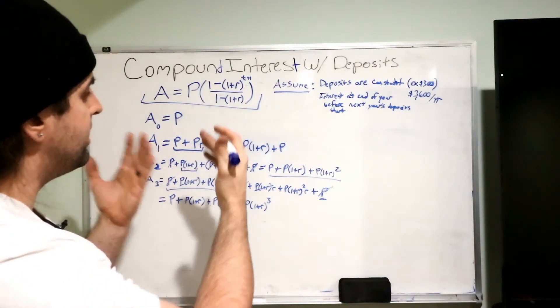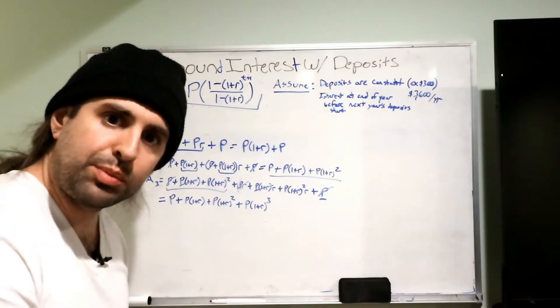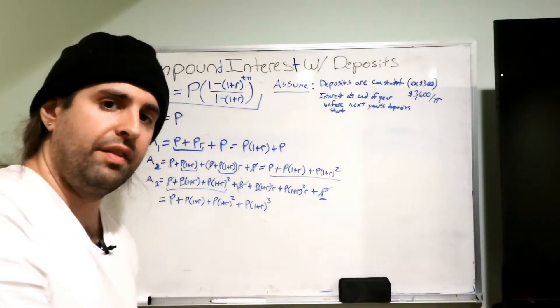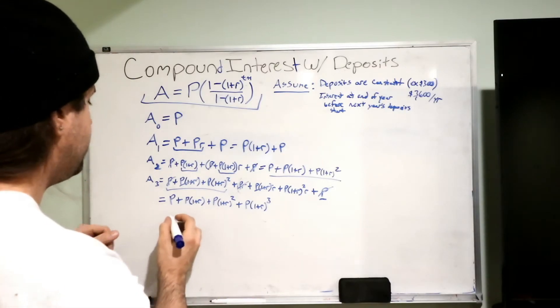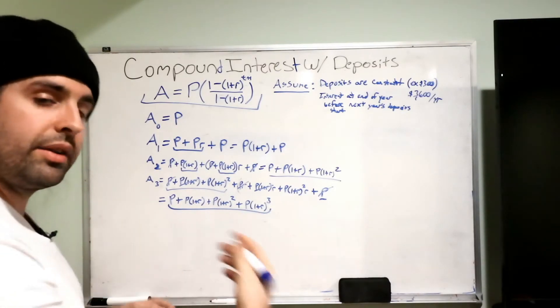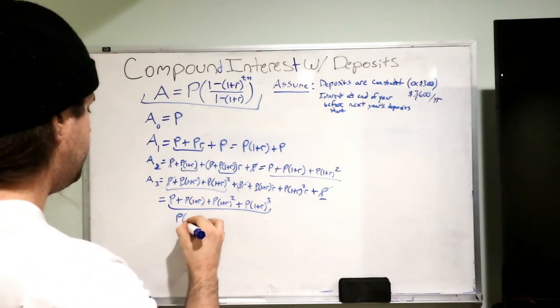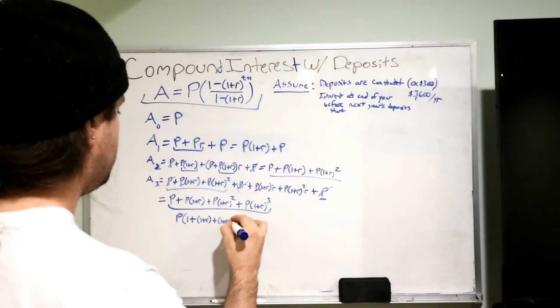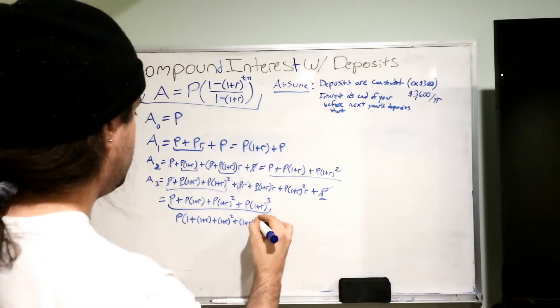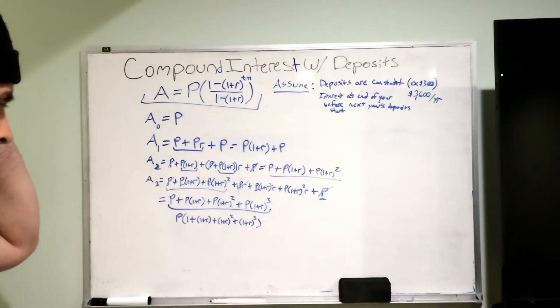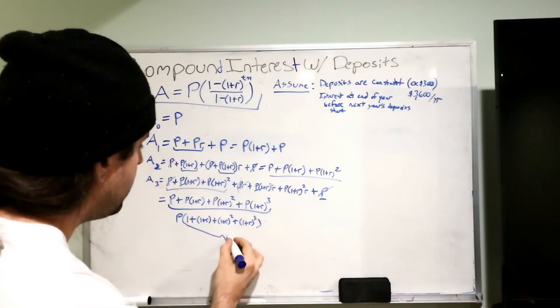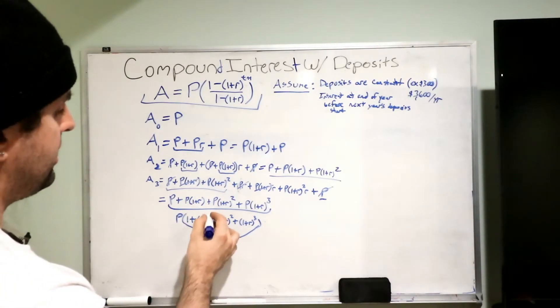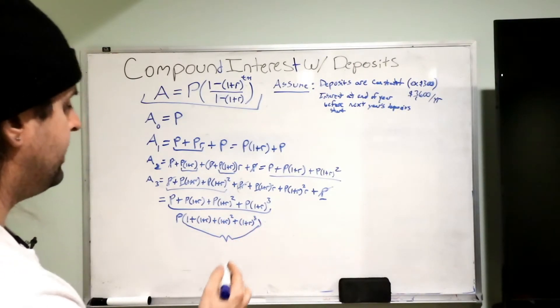And now the next portion, it relies on a derivation and then a proof to solidify the derivation which I'm not going to show in this video. Alright? But if we look right here and we pull out the common term which is P. We get P times 1 plus 1 plus R plus 1 plus R squared plus 1 plus R cubed. That. I just removed a P from all those. Alright? Now this right here is known as a geometric sum. Okay? Where you have 1 plus 1 plus R to the 1 plus 1 plus R to the 2 plus 1 plus R to the 3.